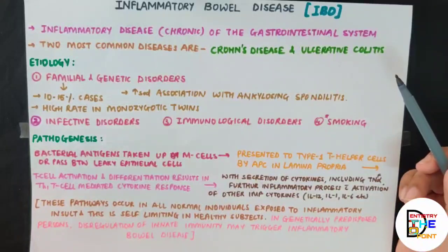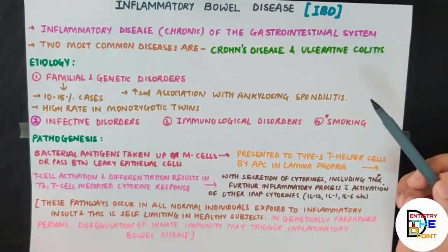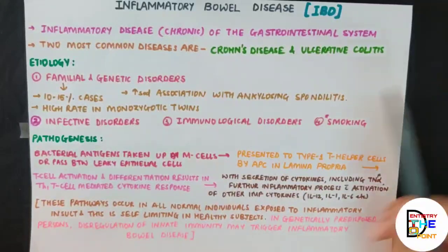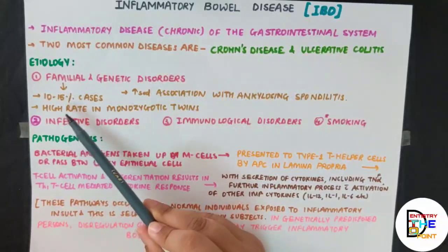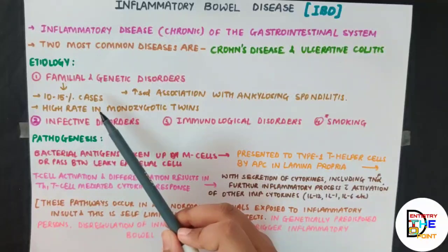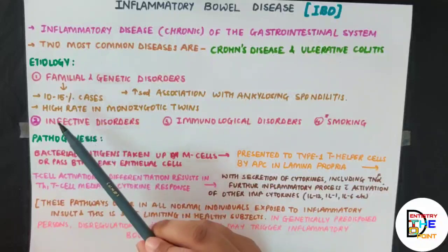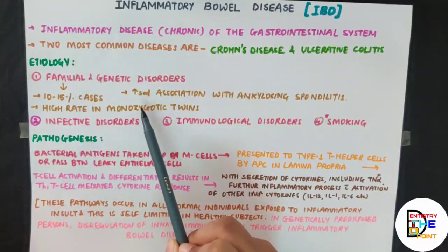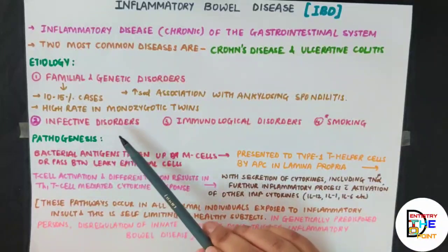Now for etiology and pathogenesis: the exact cause or initiating event in both diseases is still unknown, but a few factors have been implicated. First is familial and genetic disorders — that is, hereditary factors. In 10 to 15% of cases, patients have relatives with inflammatory bowel disease. A high rate is also seen in monozygotic twins, and there is a strong association with ankylosing spondylitis.